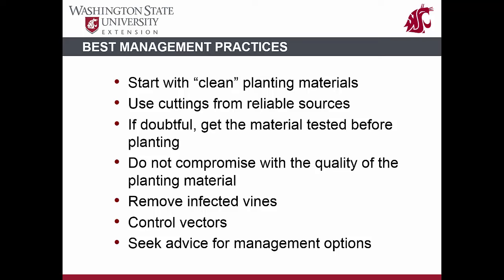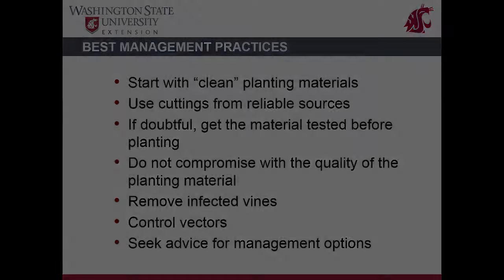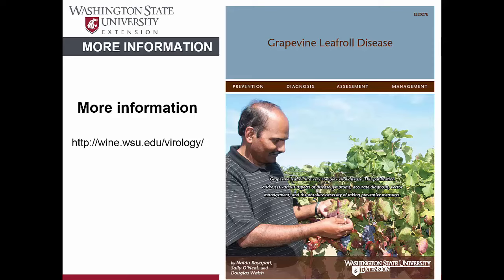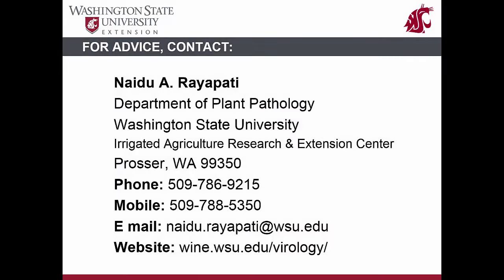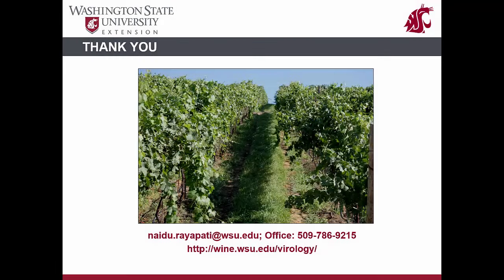Never assume that grapevines without visual symptoms are healthy. Never produce planting materials from an unreliable source or take cuttings from an existing vineyard without knowing its sanitary status. Remove infected vines and control vectors to prevent the spread of viruses. Seek advice if you are not sure about symptoms in your vines. More details about grapevine leaf roll disease can be found in a bulletin available in English and Spanish, and additional information on other virus diseases is available on the associated website.